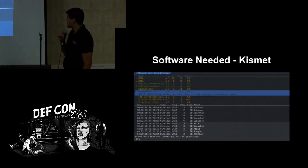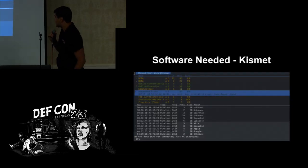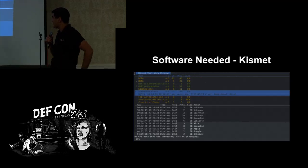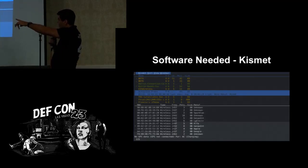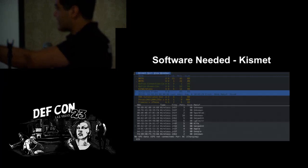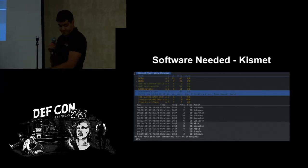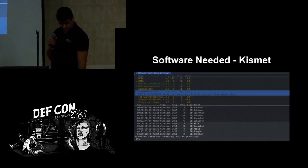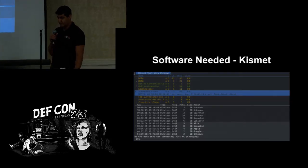This is Kismet — it's a little hard to see, the coloring isn't great when you start it up. I've selected the Auto Group Probe, and this is showing different Wi-Fi that's actually attempting to connect to different hotspots. They're not even associated — you're getting this information without them even being connected to an AP.